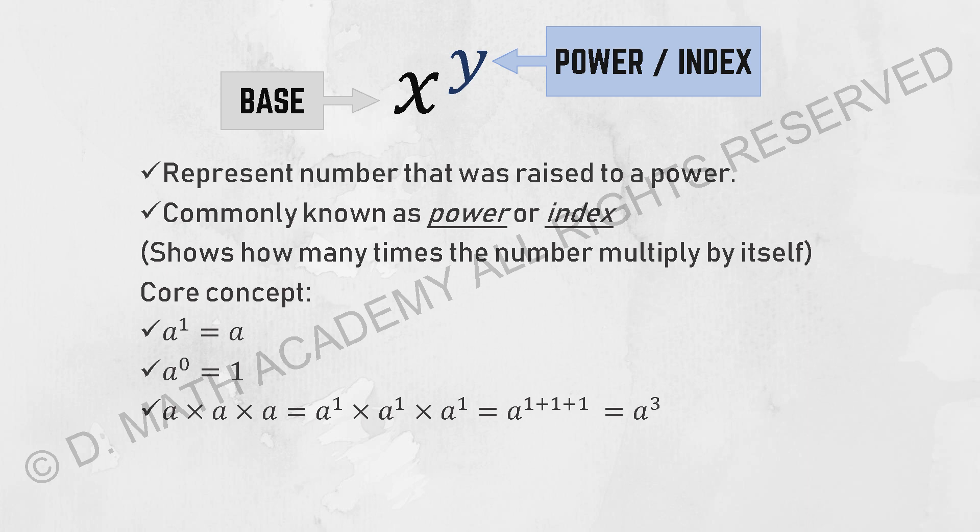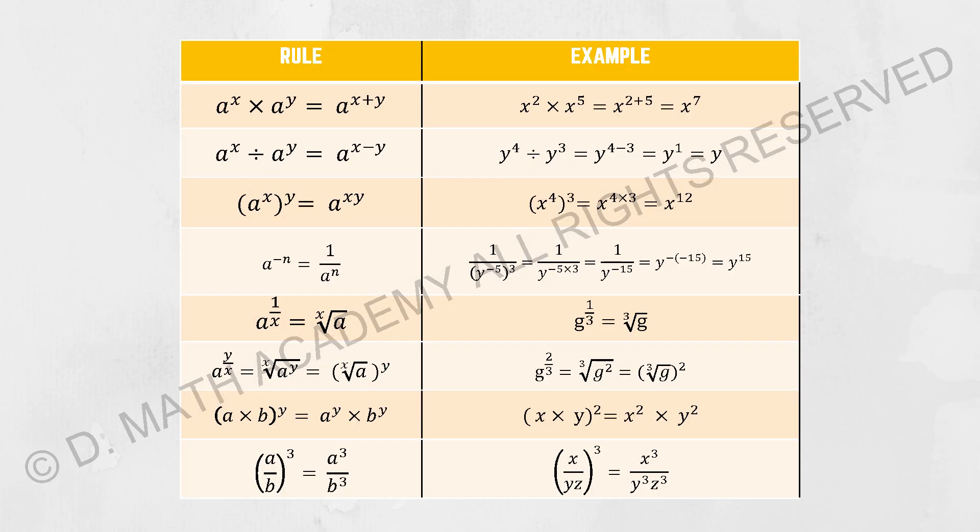Anything to the power of 1 is the number itself. Anything to the power of 0 is 1. There are a couple of rules listed here that show how indices interact with each other. When a^x times a^y, since their base is the same, which is a, all you need to do is take their powers and add them up.